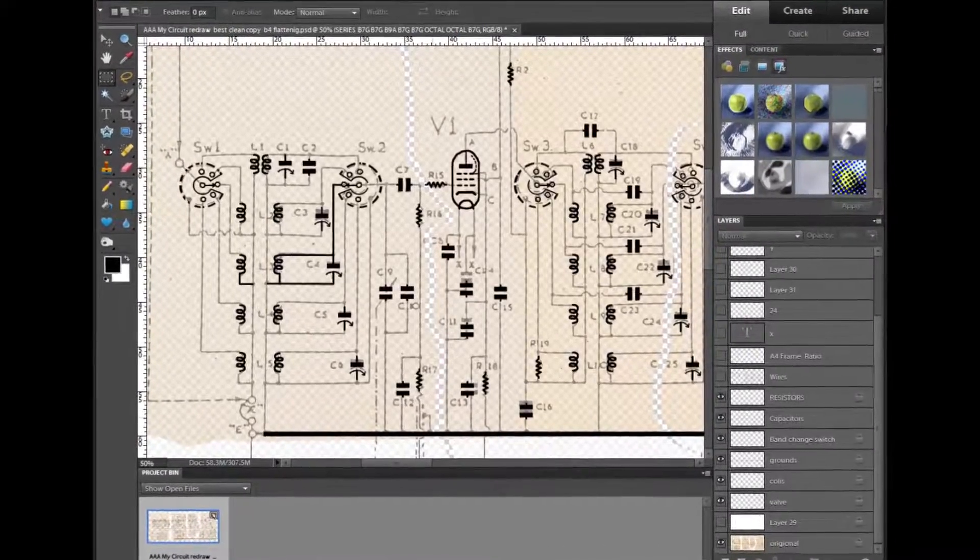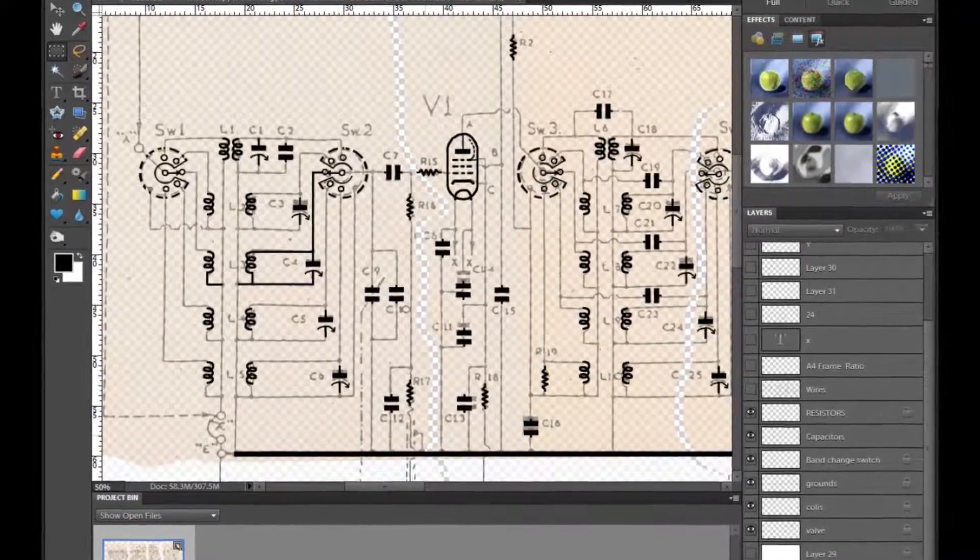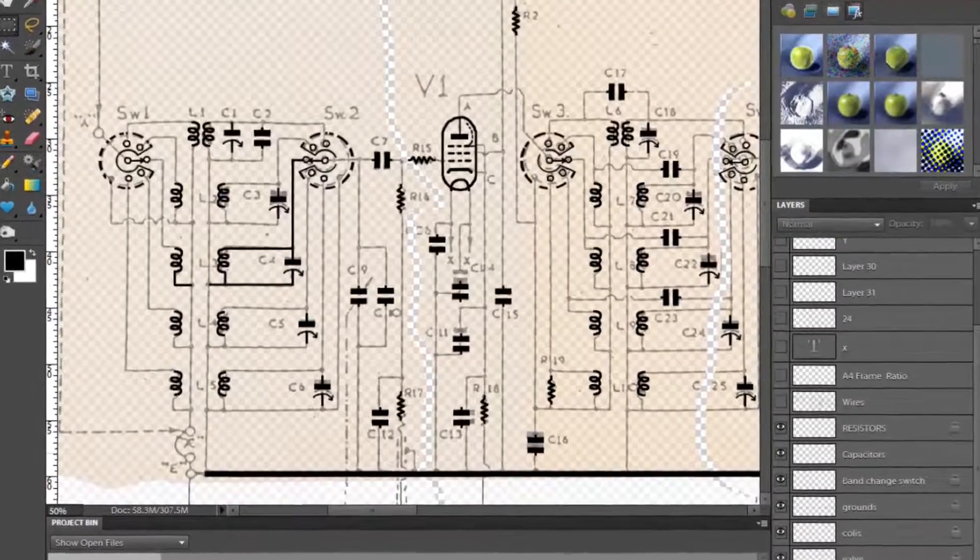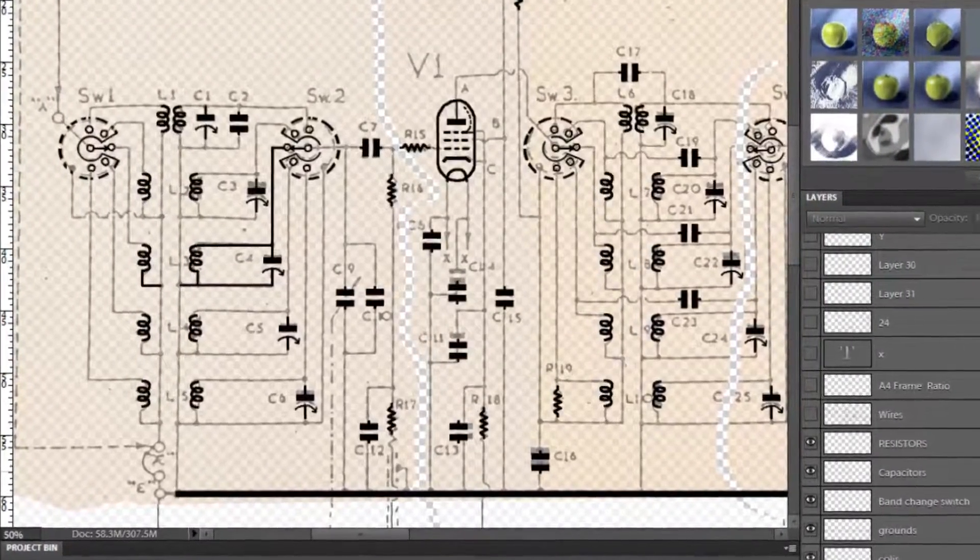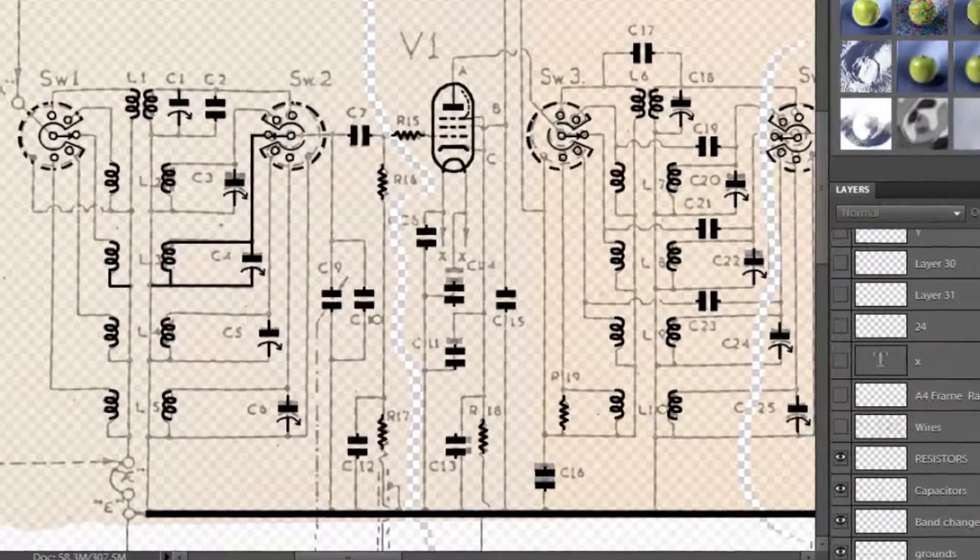And here I've put in the switches and the coils and the valves. Again, they're each on their own layer, so I only have to draw a component once and then copy and paste it as needed and orientate it as needed.